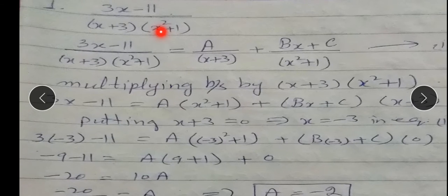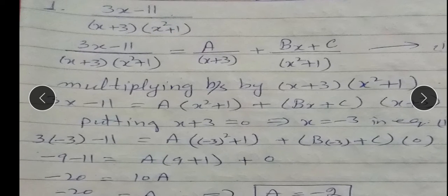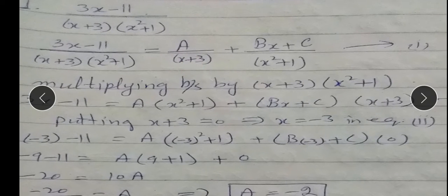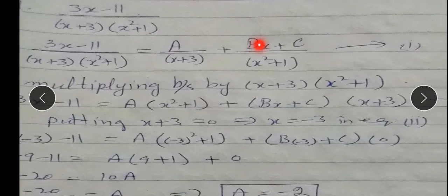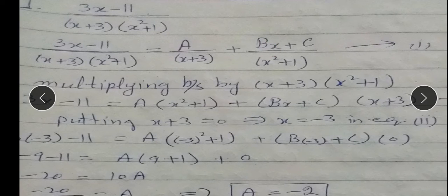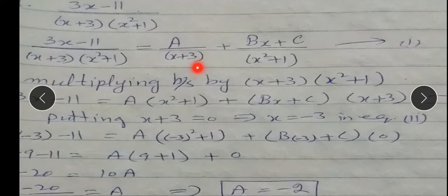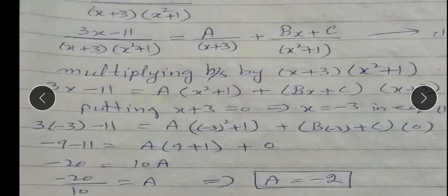Isko hum factors bhi nahi bana sakte. To 3x-11 over (x+3)(x²+1) is equal to: linear ke liye A over (x+3), plus quadratic ke liye do variables B aur C lenge, aur B ke saath x introduce karenge, plus (Bx+C) over (x²+1). Yeh equation 1 ho jayegi. Now multiplying both sides by (x+3)(x²+1).